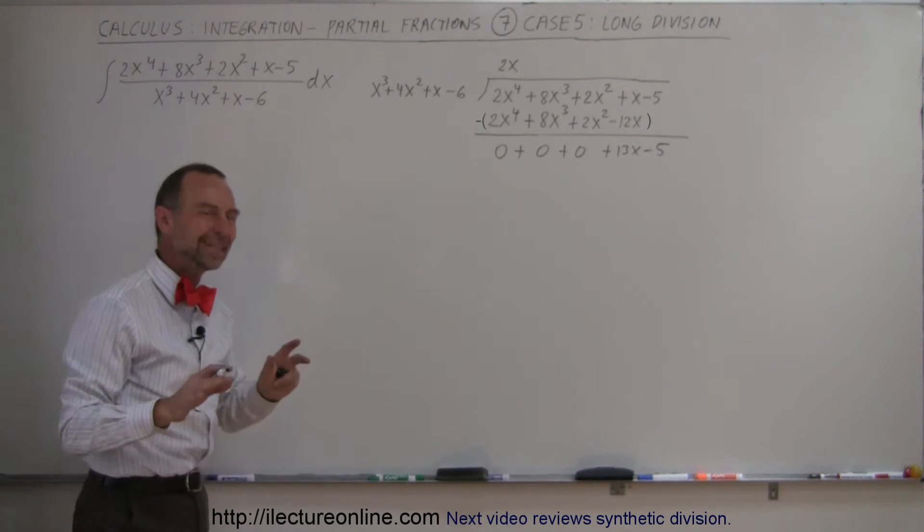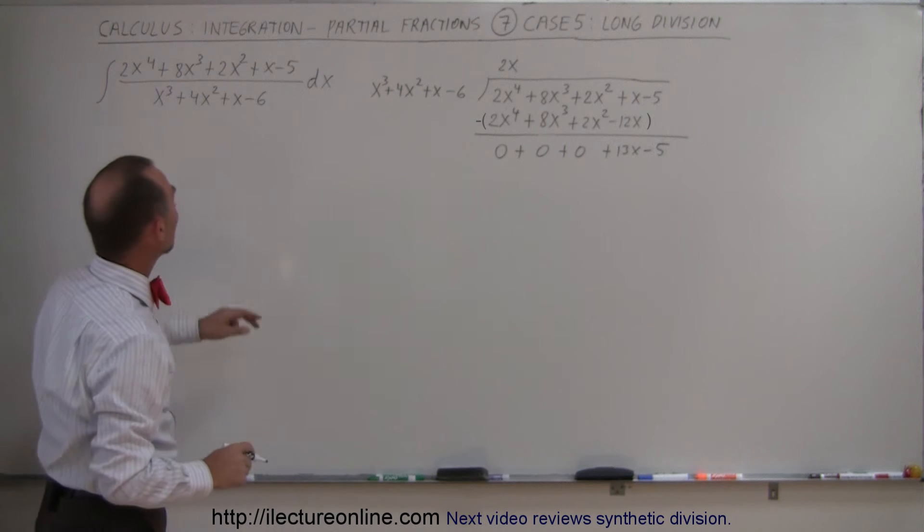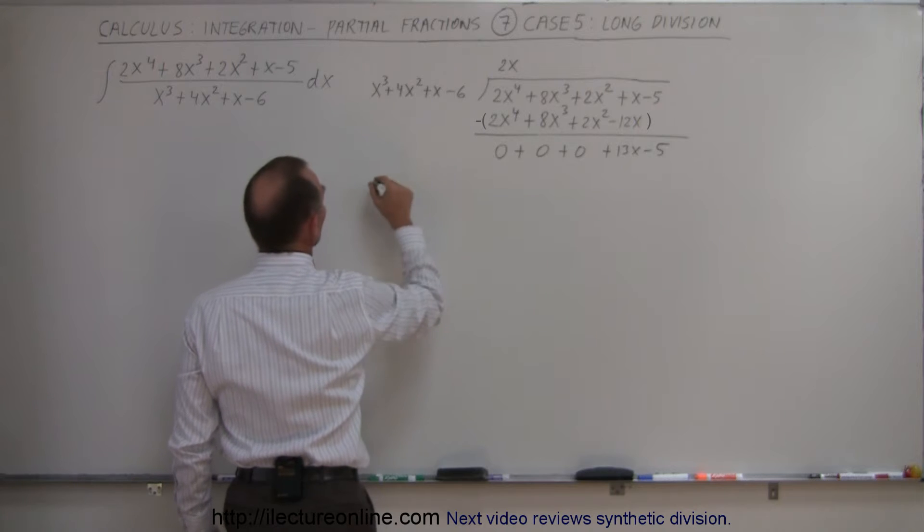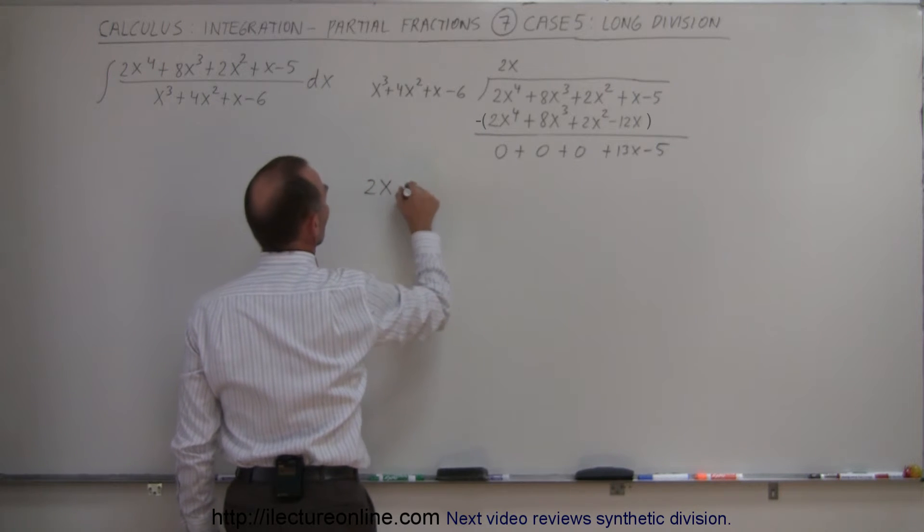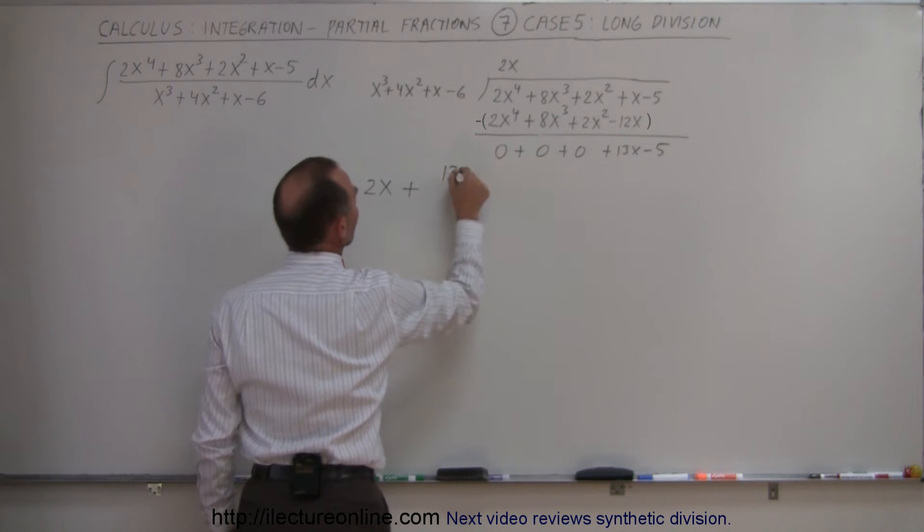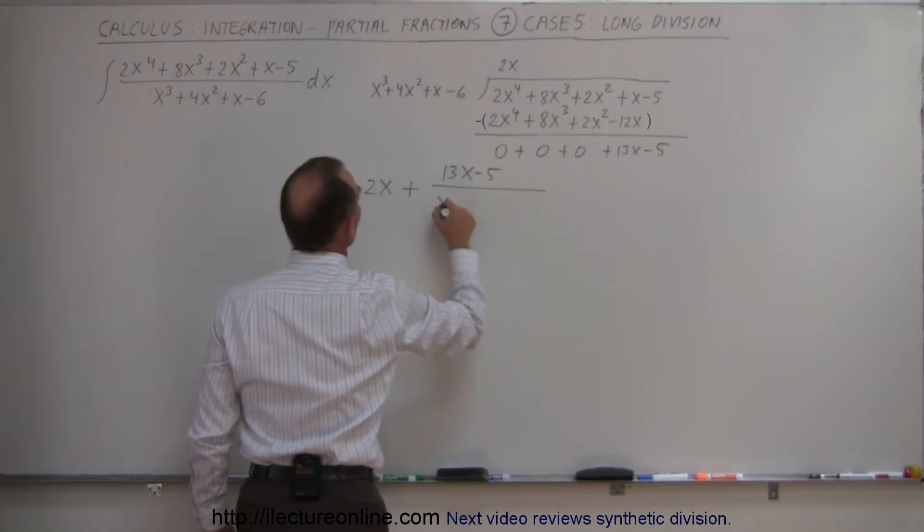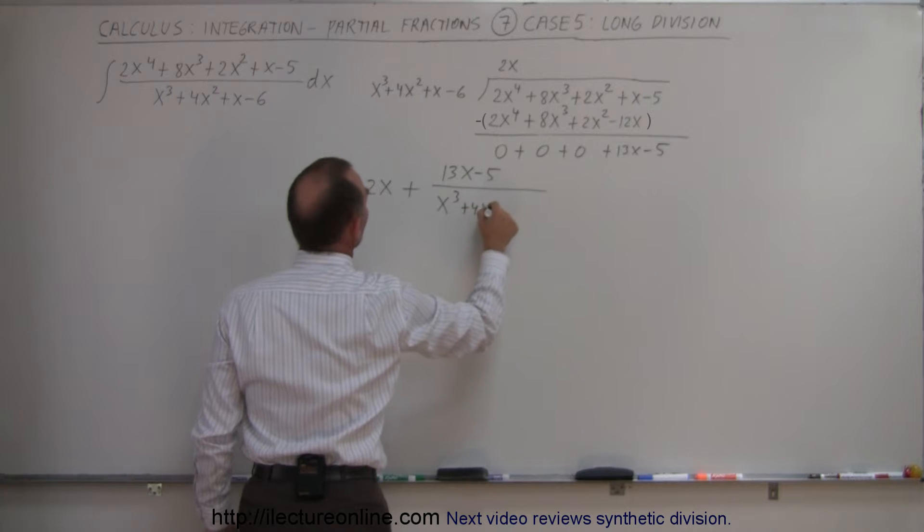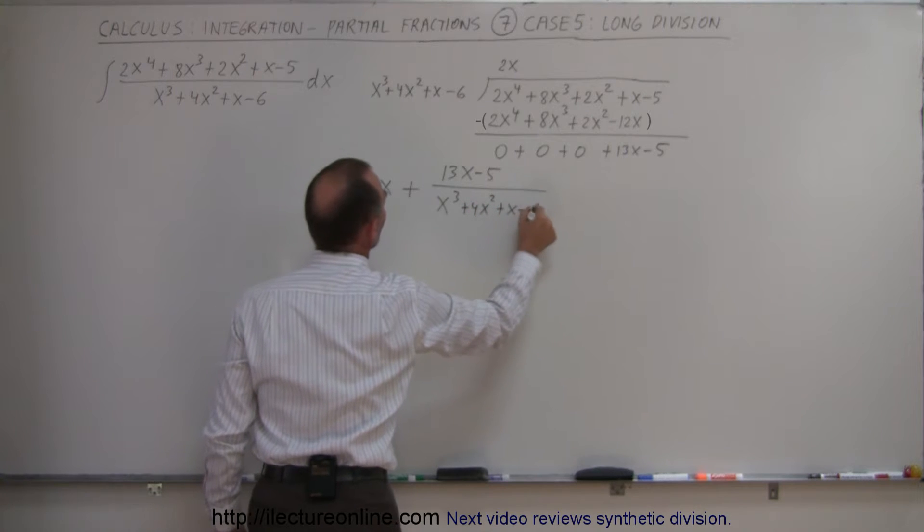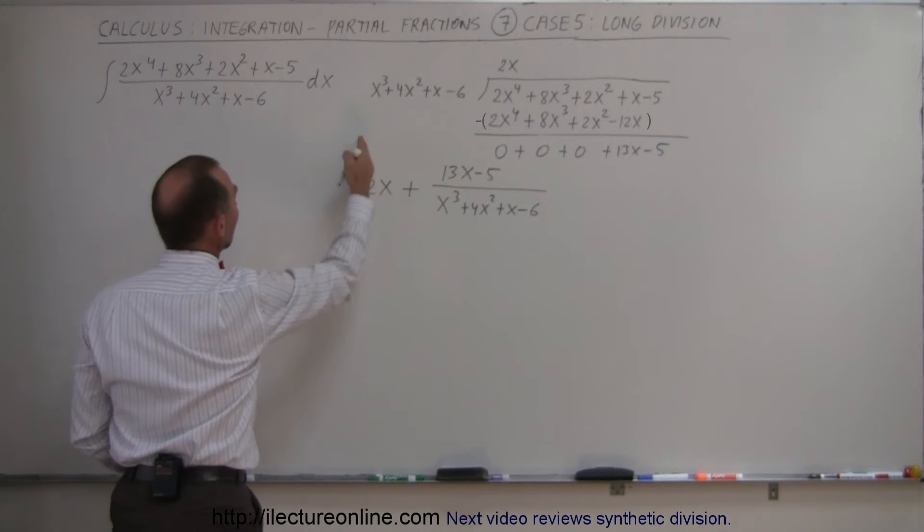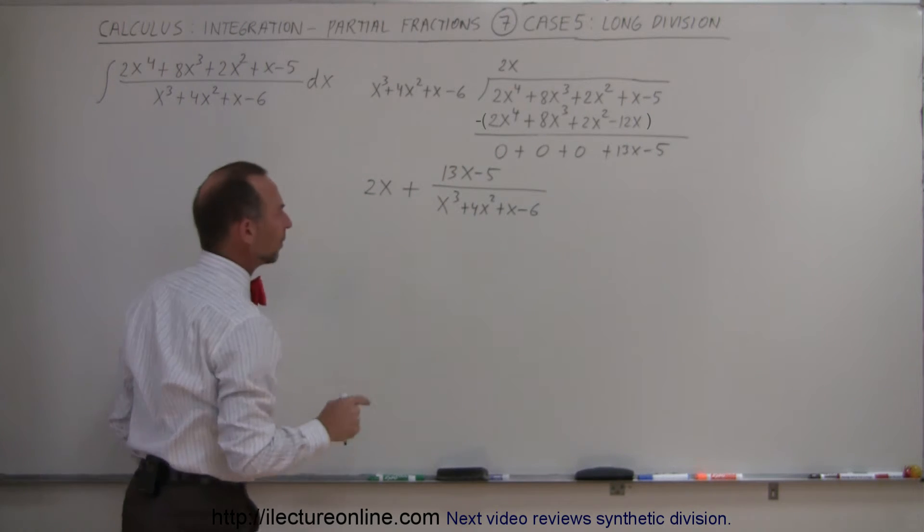Notice I took an easy case just to illustrate, which means that this fraction can now be written as the 2x plus the remainder 13x minus 5 divided by the denominator x cubed plus 4x squared plus x minus 6. So that would be easier to integrate because now we can integrate 2x, which is easy, and now we can integrate this portion right there.